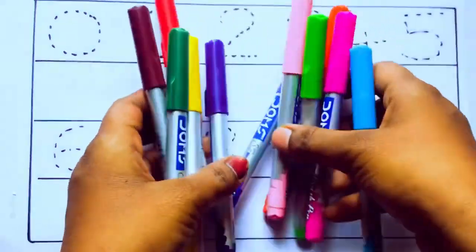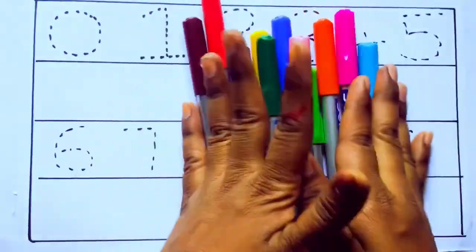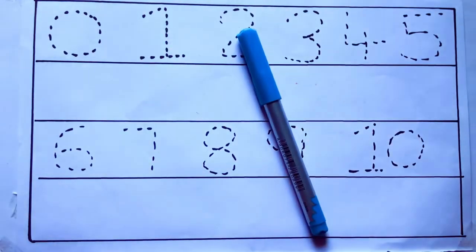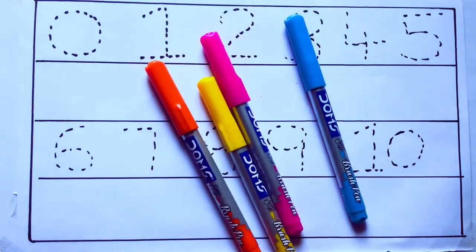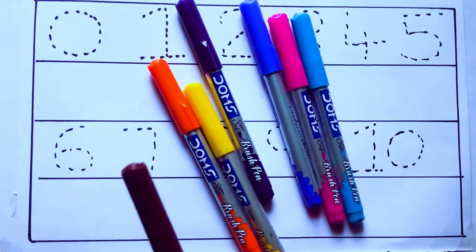Let's learn some colors. These are all the color pencils. Let's learn the names: sky blue color, pink color, yellow color, orange color, violet color, blue color.